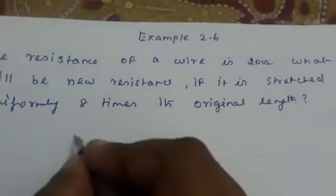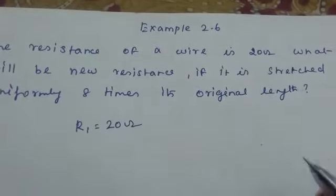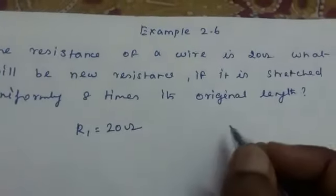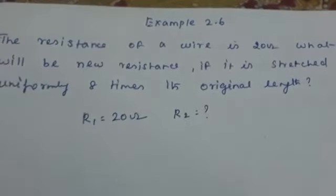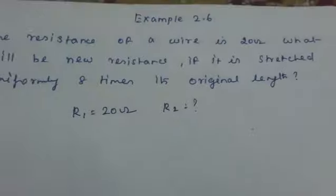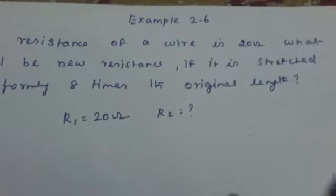What is given in the problem is the resistance of a wire, that is 20 ohm. That is a given wire. Now, you have to find out the resistance of the wire if the length of the wire is 8 times of the length of the previous wire, that is original length.